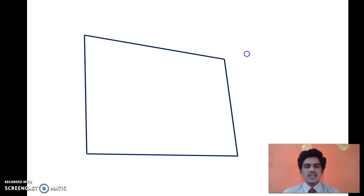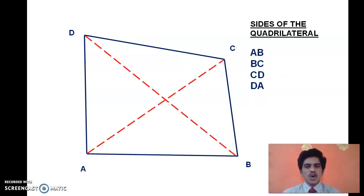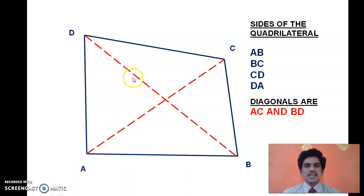We have to find the lengths of the sides of this quadrilateral and determine what type it is. The quadrilateral ABCD has four sides: AB, BC, CD, and DA. In addition, a quadrilateral has two line segments joining non-adjacent (opposite) vertices — these are called diagonals. Here the diagonals are AC and BD. These are the basic concepts to remember when using the distance formula for quadrilaterals.